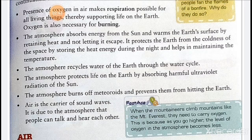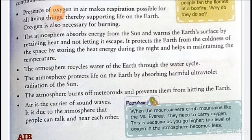The atmosphere protects life on Earth by absorbing harmful ultraviolet radiation from the sun. As we discussed in the last class, the ozone layer is present in the stratosphere, and this ozone layer protects us from harmful ultraviolet rays.